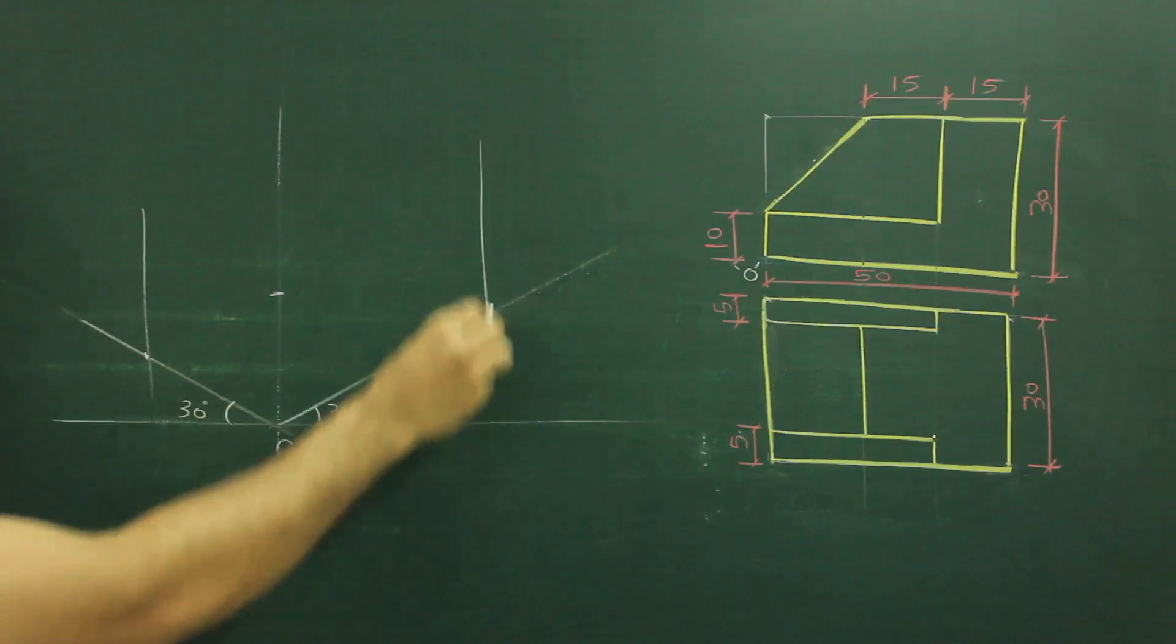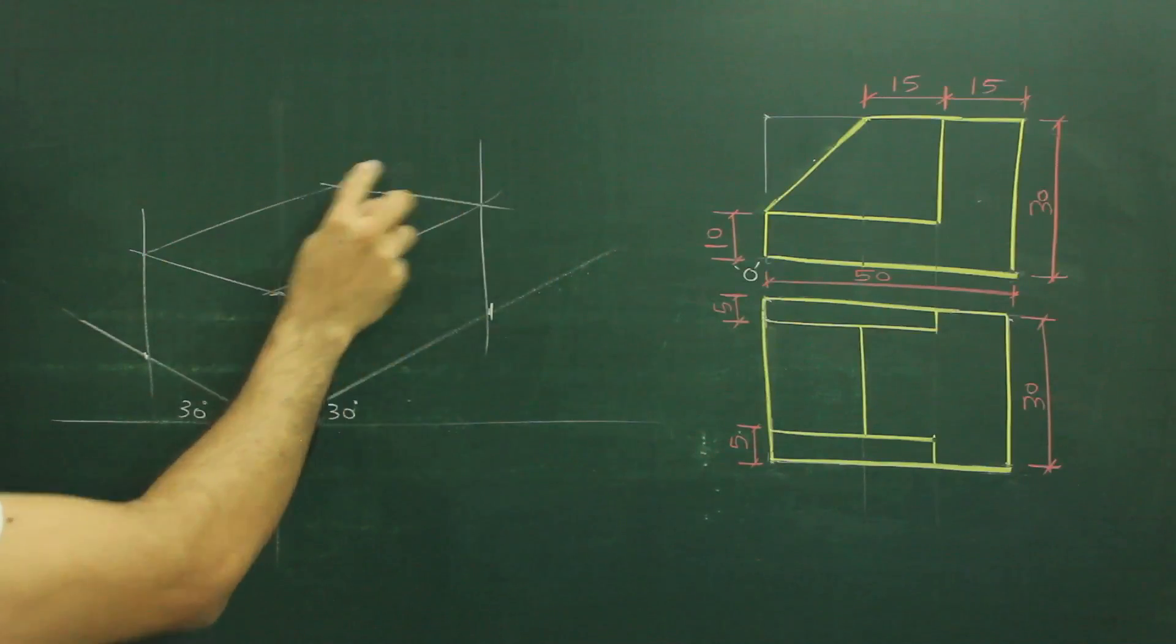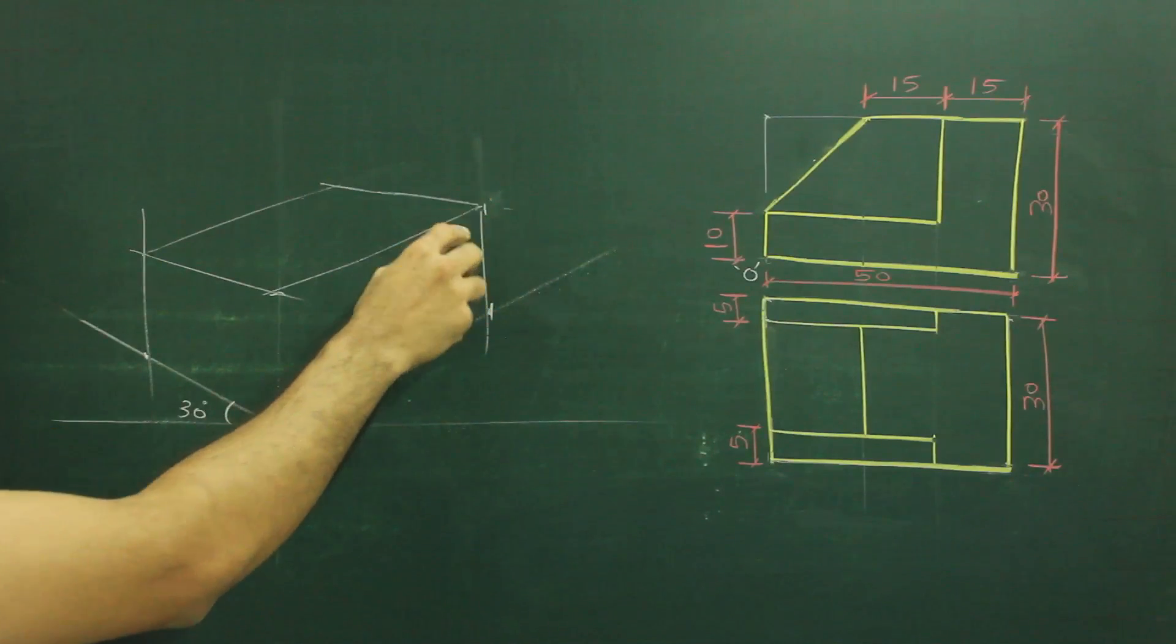Draw vertical line. Draw incline lines at 30, 30 degree. So we will get this layout.